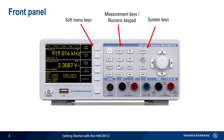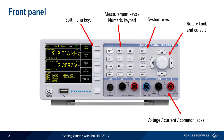The rotary knob and cursors can be used to navigate menus or to change parameter values. Below this are standard size voltage, current, and common jacks, which are connected to the device under test. A pair of sense connectors are also provided for making four-wire resistance measurements, and above these are controls for holding, nulling, and triggering measurements.